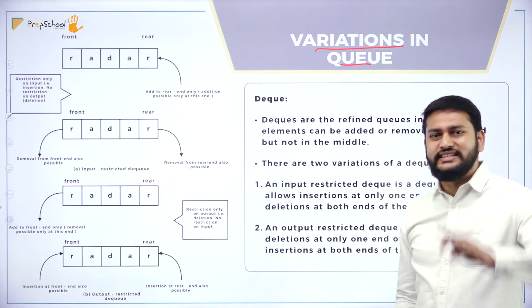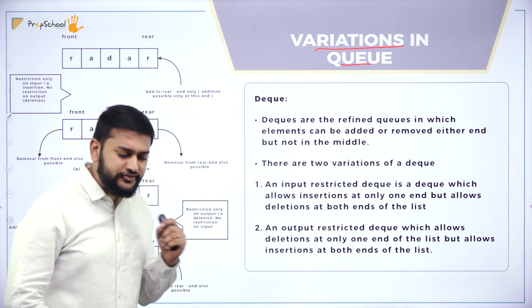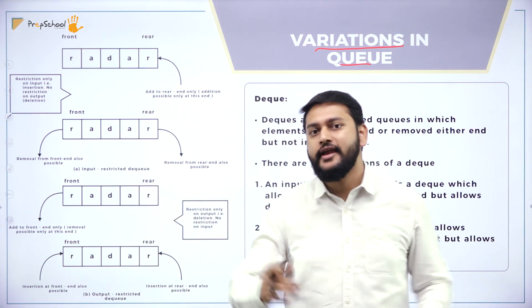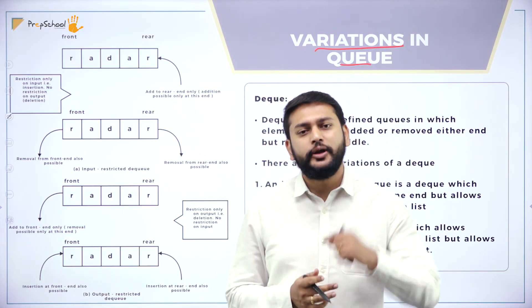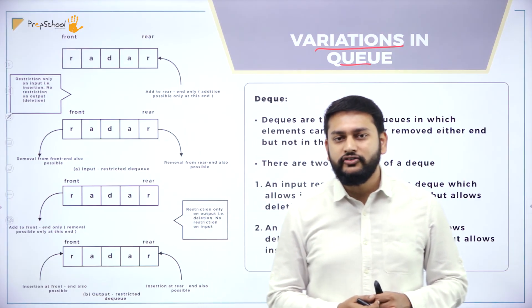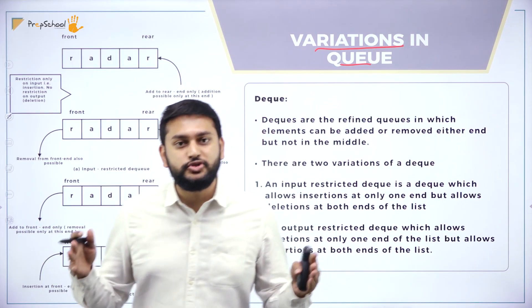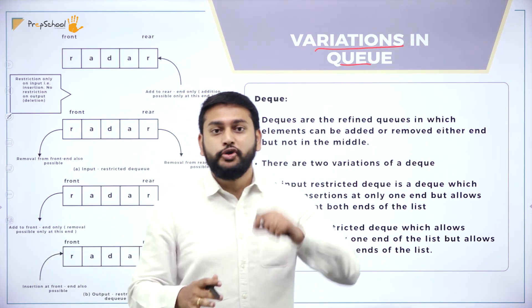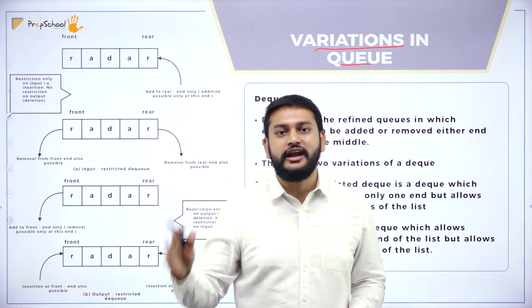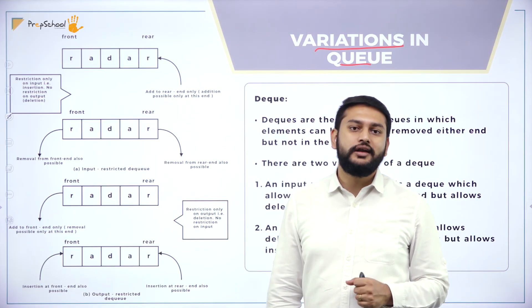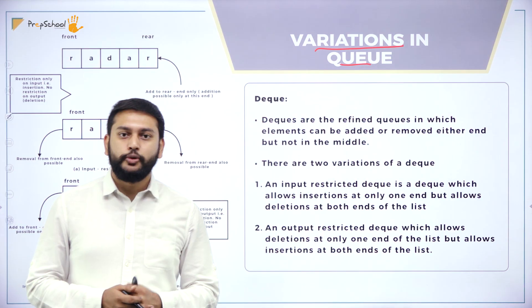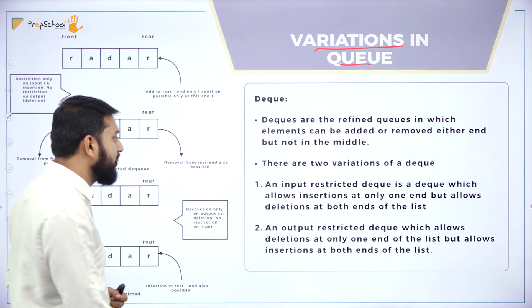We also have variations of queues called Deque (Double-Ended Queue). In a deque, you can perform NQ and DQ operations at both ends — meaning insertion and deletion can happen at both ends. In the previous example, insertion was only at the rear end and deletion only at the front end. But in a deque, that is not the case. There are two types: input restricted deque — deletion is allowed at both ends but insertion only at one end; and output restricted deque — insertion is allowed at both ends but deletion only at one end.